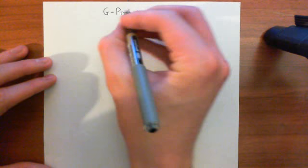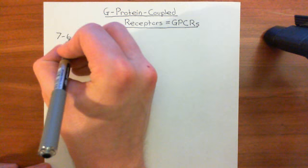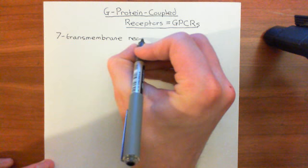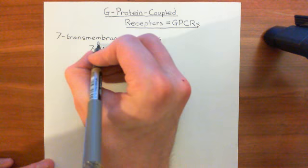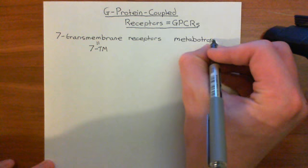G-protein coupled receptors also go by other names. They're called seven transmembrane receptors — abbreviated to 7TM — because they have seven transmembrane domains, seven membrane-spanning alpha helices. Another name, often used by neuroscientists, is metabotropic receptors. So three different names, all for the same type of receptor.